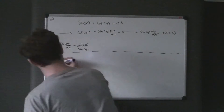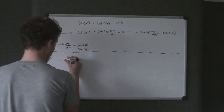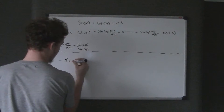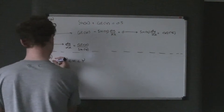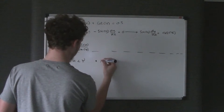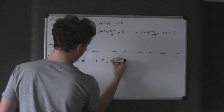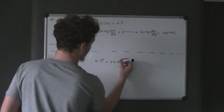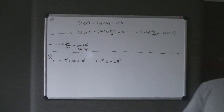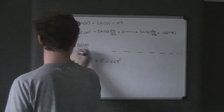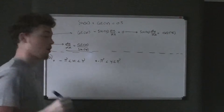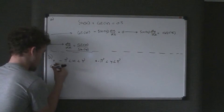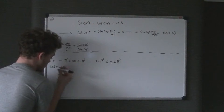We're told that x lies between negative pi and positive pi, and y lies between negative pi and positive pi. We need to find the coordinates where dy/dx equals zero. Since dy/dx equals cos x over sine y, we need cos x over sine y to equal zero.